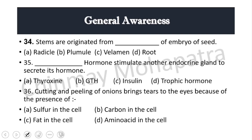Question 34: Stems are originated from which part of the embryo of a seed? Stems originate from the plumule, while roots originate from the radicle. If you want the root, it's the radicle; for stem origin, it's the plumule.